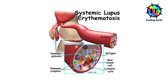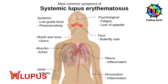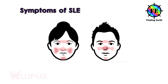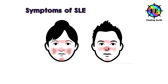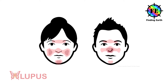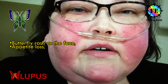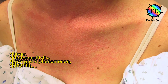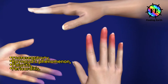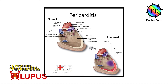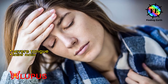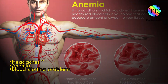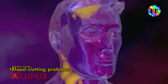Today we will talk about systemic lupus erythematosus. Let's first know the symptoms of SLE. Symptoms can vary and can change over time. Common symptoms include butterfly rash on the face, appetite loss, hair loss, fever, photosensitivity, Raynaud's phenomenon, pleuritis, pericarditis, severe fatigue, joint pain, joint swelling, headaches, anemia, and blood clotting problems.